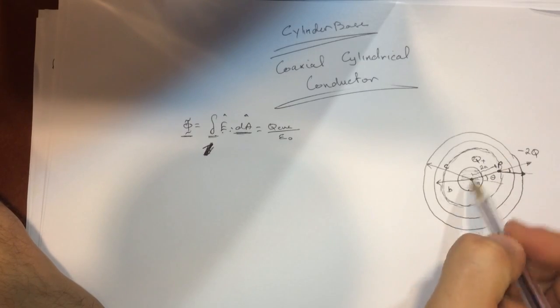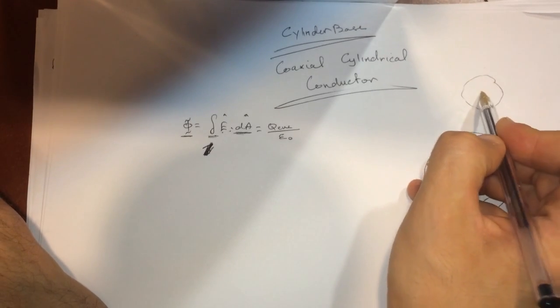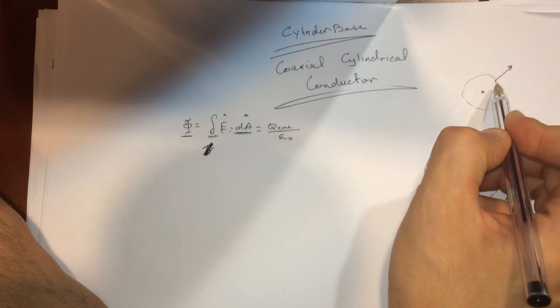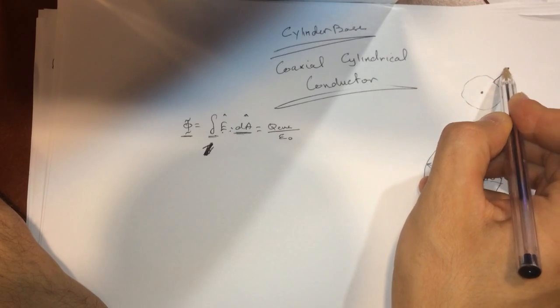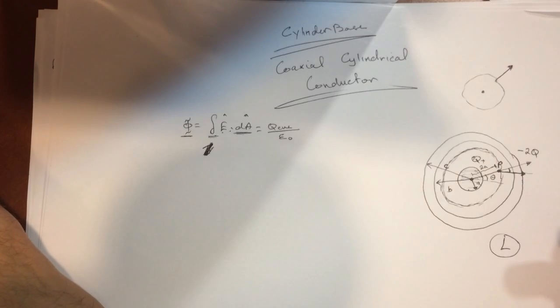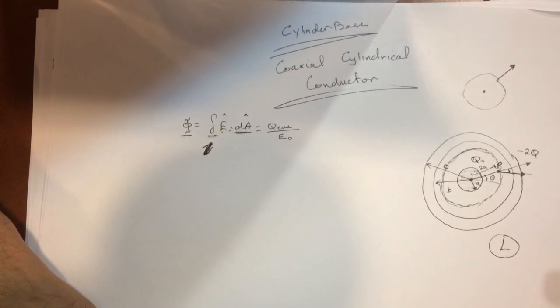If you look at it closely, the electric field will be pointing like this, and the dA vector will be pointing in the same direction. So it's like saying that it's cosine of zero.